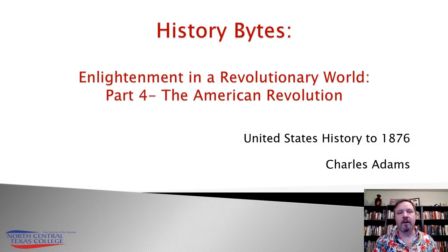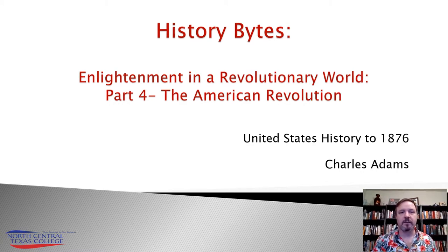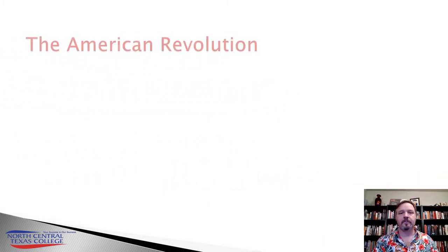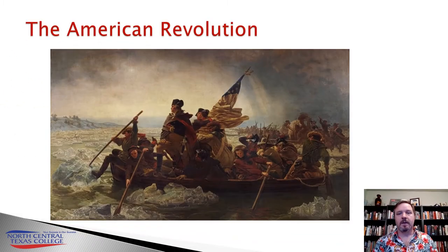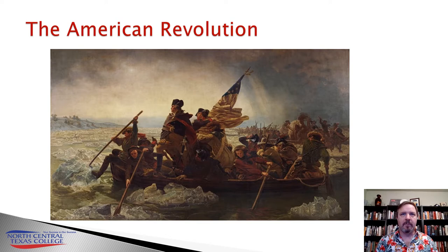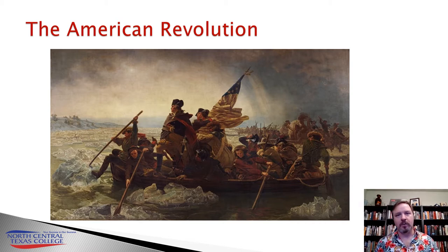Welcome to part four of Enlightenment in a Revolutionary World. Now we're going to talk about the American Revolution. Philosophers like Voltaire and others expected monarchs to be able to reform the existing systems, but the American Revolution was a direct result of when these kind of things failed or were ignored. The Revolutionary War will come out of the wake of the Seven Years' War, which really kind of changed Europe fundamentally.